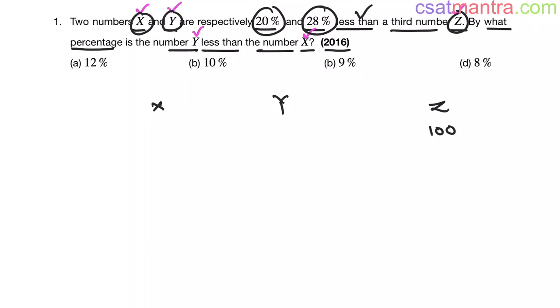Now we have X as 80 and Y as 72. Now we have to find out what percentage is the number Y less than the number X. Y is less than X. We have to find out what percentage it is lesser than X. So 80 minus 72. So this much is Y less than X. Now, how much percentage is this? 8 out of 80. We are comparing with X.